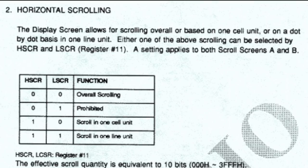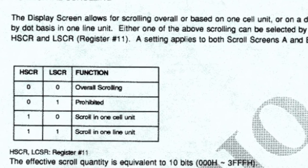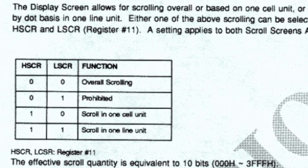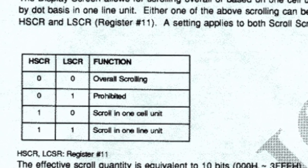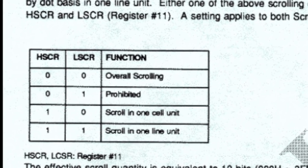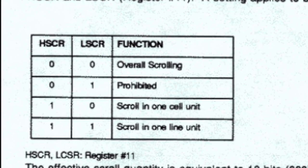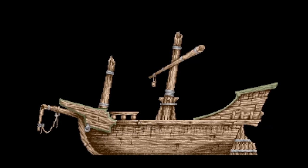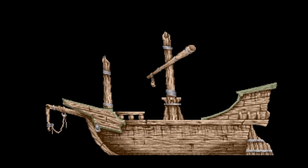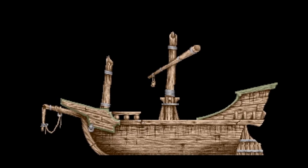Firstly, we can horizontally scroll the screen either as the whole screen, as 8 pixel high strips, or as a single pixel high strip. So here's what the boat looks like if we scroll it using single pixel high strips.